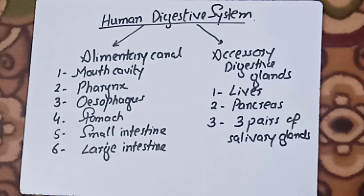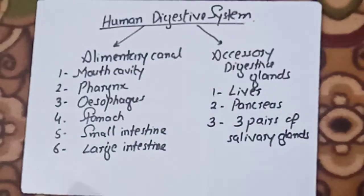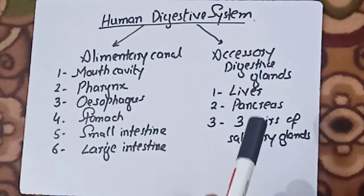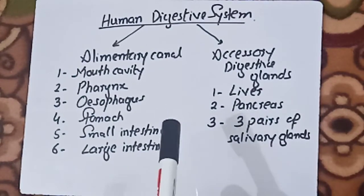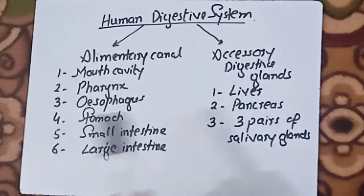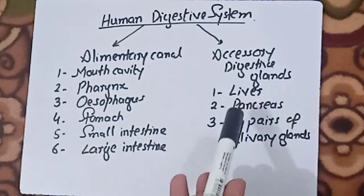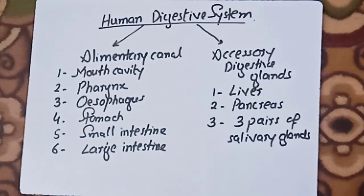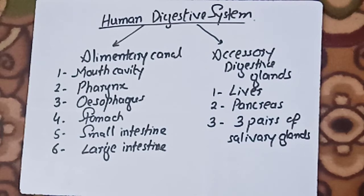The accessory digestive glands are helpful in digesting human food inside the alimentary canal. These accessory digestive glands include the liver, the pancreas, and the three pairs of salivary glands which are present in the mouth cavity.